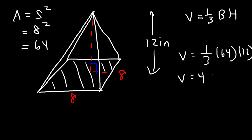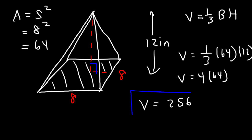So this becomes 4 times 64, which is 256. The volume is 256 cubic units. And that's a simple way in which you can calculate the volume of a pyramid.